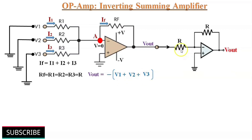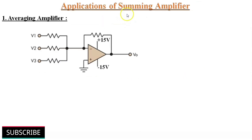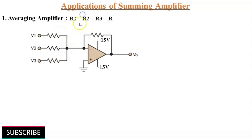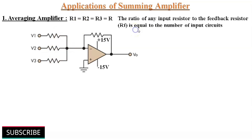By connecting one more inverting voltage follower, we can get a positive value of output. Let's discuss the applications of summing amplifier. We can use the summing amplifier as an averaging amplifier if all the input resistors are of equal value and the ratio of any input resistor to the feedback resistor is equal to the number of inputs.